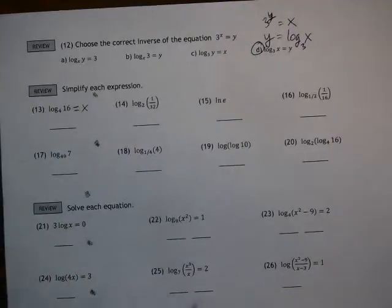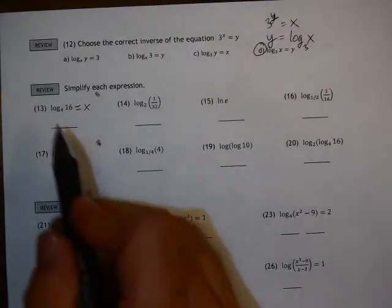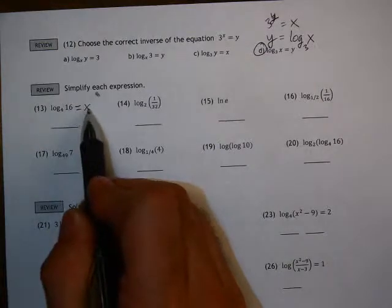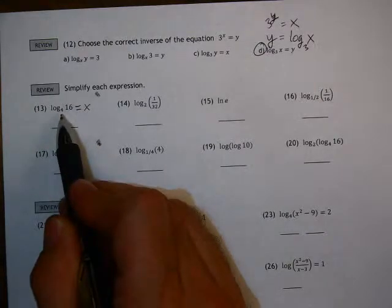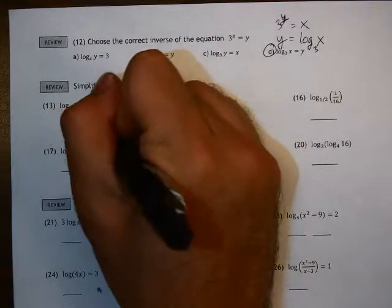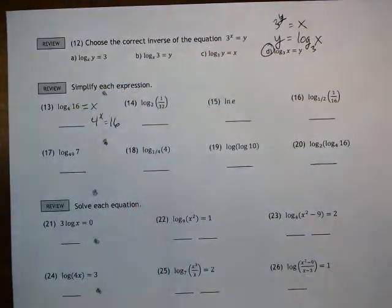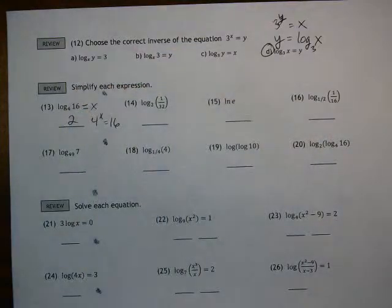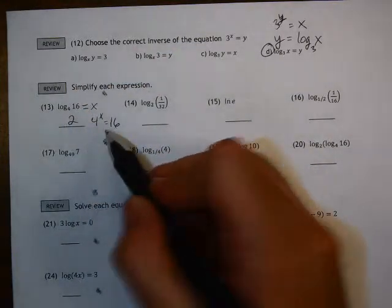And I show that because a lot of times when we're working with these logs, people forget that this gives us the exponent. So this variable would represent the exponent when you have the base of 4. So this is 4 to the x power equals 16. And that's nice and easy because that solution would be 2. 4 to the second power would give us 16.